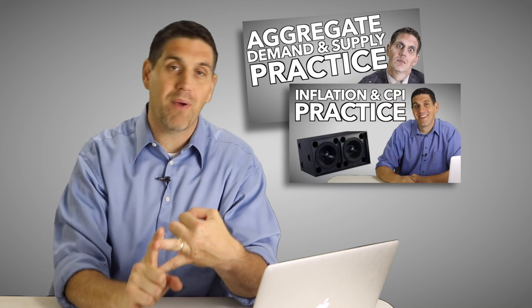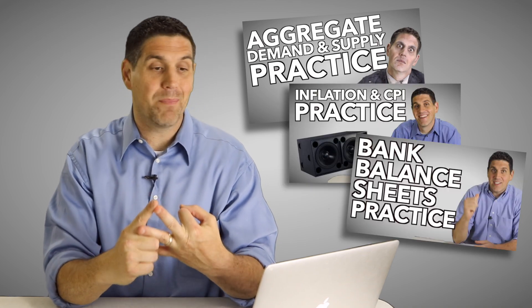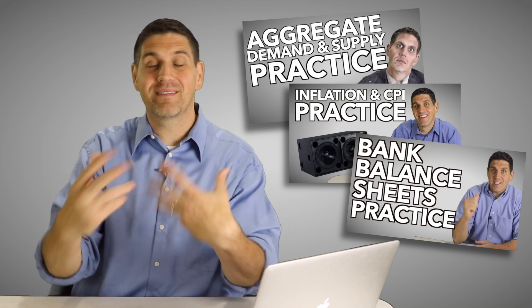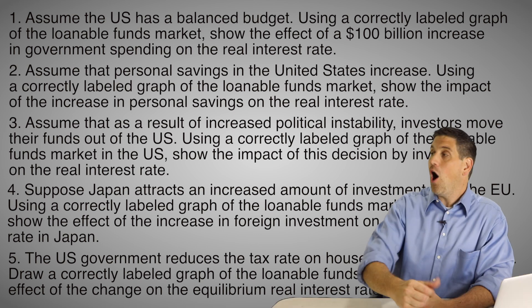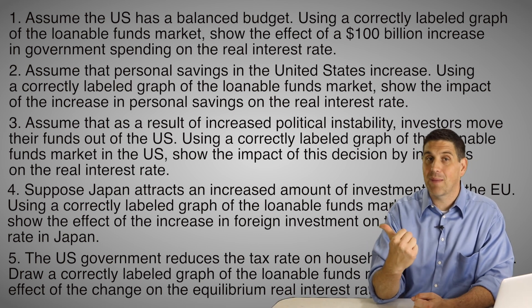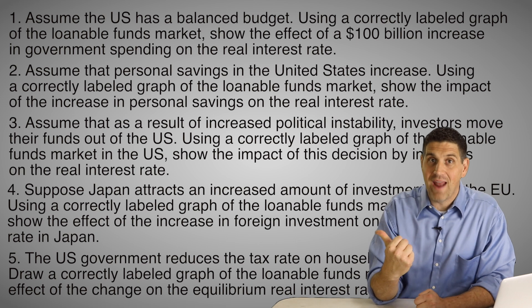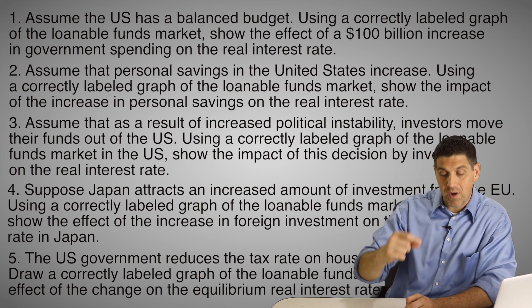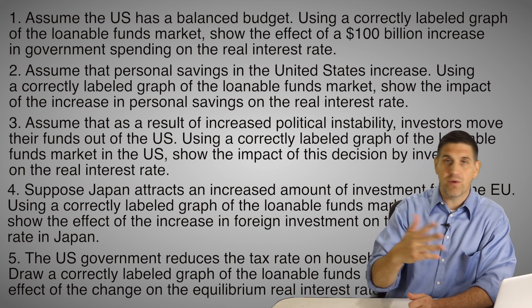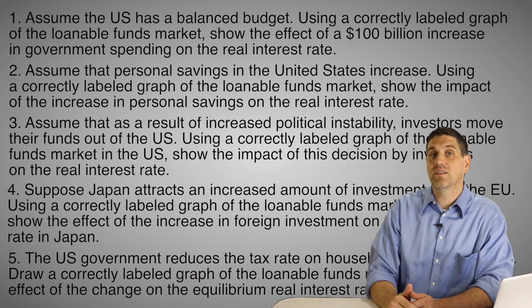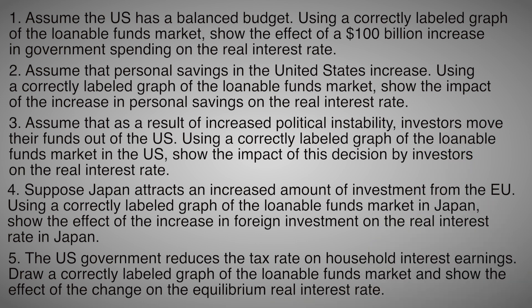You have the graph down, now it is time to practice. In other videos like for aggregate demand and supply or consumer price index or bank balance sheets, those were practice examples I came up with. This time I'm going straight to the AP macro exam — all five of the examples were actually asked on the AP macro exam. For each one, take out a piece of paper, draw the graph of the loanable funds market, and show the shift that occurs — whether it's demand or supply, what happens to the real interest rate, and the quantity of loans. Pause the video, try that, then I'll go over the answers. Good luck.